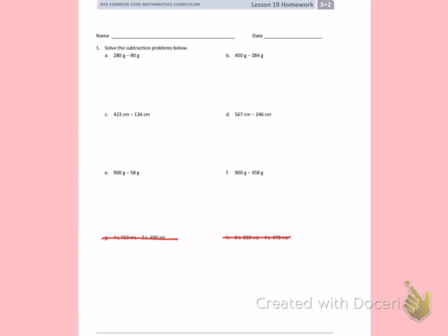A, 280 grams minus 90 grams. I'm going to start by rewriting the problem. In the ones place, I have a 0 and a 0, so I'm going to subtract 0.